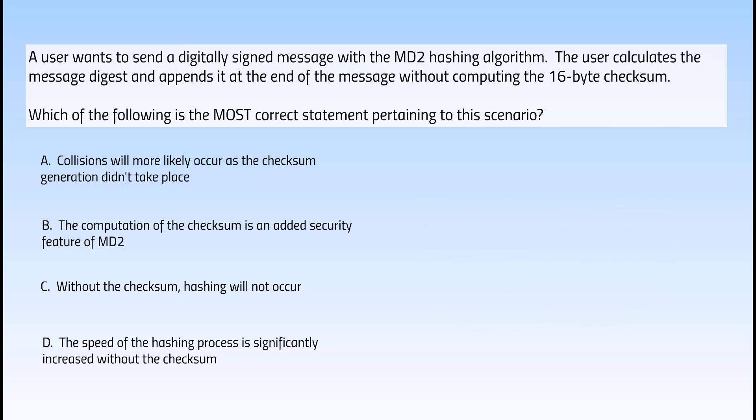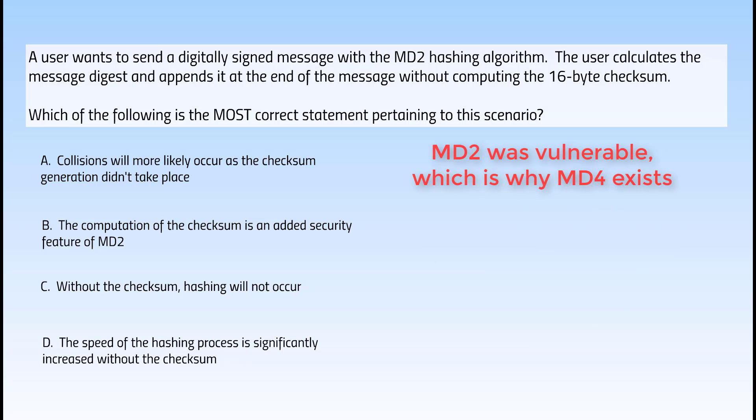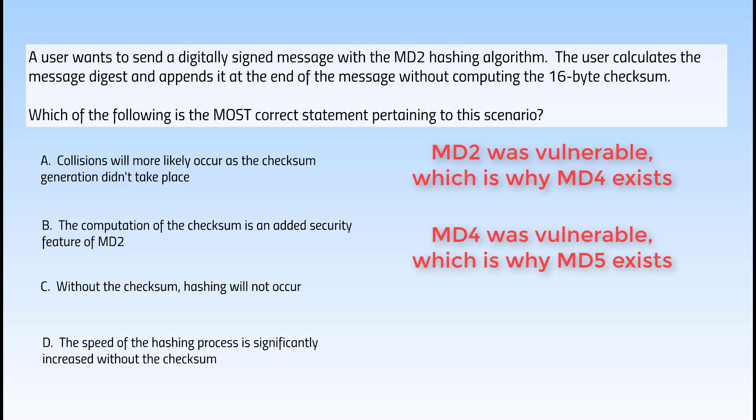MD2 was found vulnerable — that's why MD4 exists. MD4 is definitely in your study guides, and now you know why it was created and what came before it. Even though MD2 isn't really mentioned in the Shon Harris study guide, you now know it exists because it was superseded by MD4. In the same train of thought, why do we have MD5? Because MD4 was most likely found vulnerable as well — which it was.